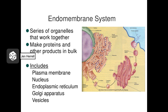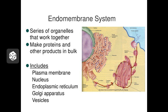The endomembrane system includes several different organelles. It includes the nucleus, which holds the information for making the product; the ER, where the product is actually made; the Golgi body, where the product is finished and packaged; vesicles, which deliver this product between the organelles; and the plasma membrane on the outside of the cell, which eventually will release the product into the extracellular environment.